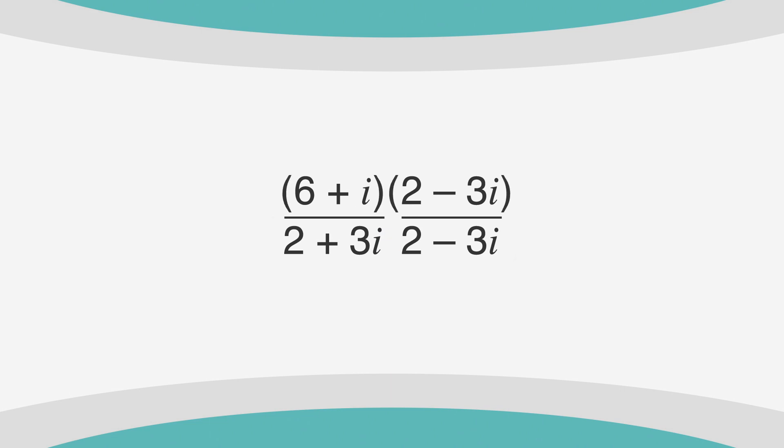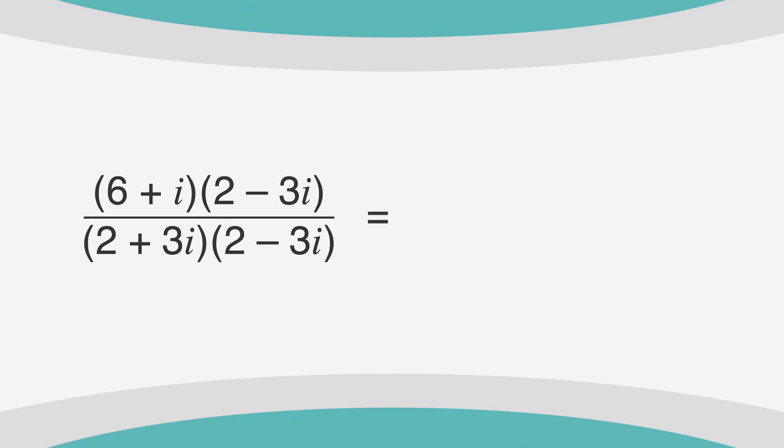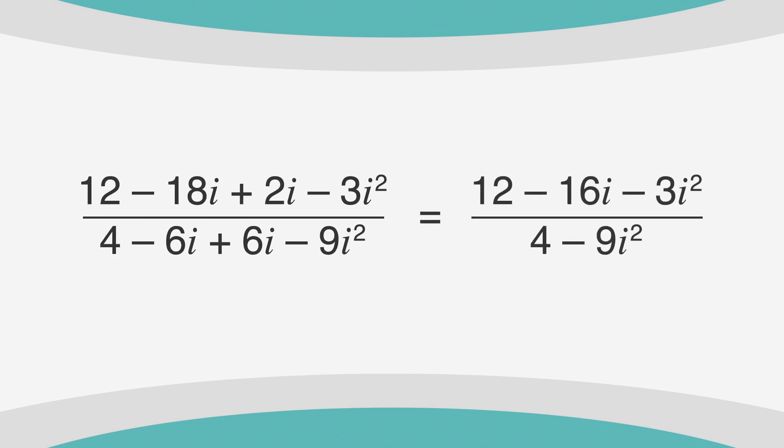Numerator times numerator and denominator times denominator. Using the FOIL method, we get 12 minus 18i plus 2i minus 3i squared over 4 minus 6i plus 6i minus 9i squared. That simplifies to 12 minus 16i minus 3i squared over 4 minus 9i squared.